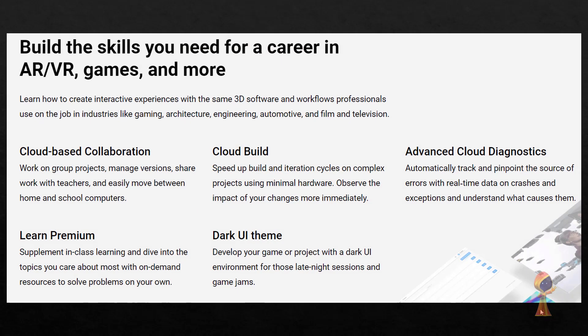To give you an idea of what you can do with a student license: you have cloud based collaboration, and you have Learn Premium — which is free for now during COVID-19, but later on as well, if you're a student, you can use Learn Premium for free. Then you can do cloud build, where the build runs on the cloud and you can have simple hardware for development. There's also advanced cloud diagnostics, and most importantly for some people, you can have the dark UI theme — which is normally only for Pro and Enterprise editions of Unity — for free with student.